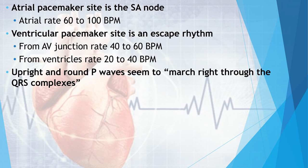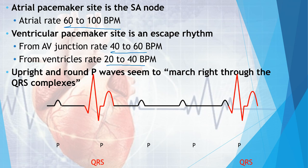In third degree heart block, upright P waves appear to march through the QRS complexes independently. The ECG graphical presentation shows missing QRS complexes because there is no AV conduction — SA nodal impulses are not transferring to the bundle branches or Purkinje fibers, so ventricular contraction is reduced. This results in the dissociation between P waves and QRS complexes.